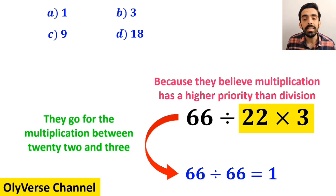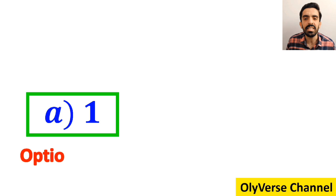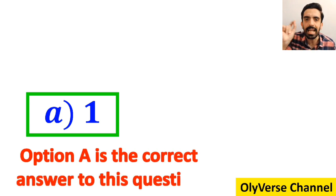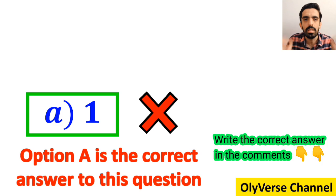Then, without any hesitation, they conclude that the correct answer to this question must be option A. However, this answer is absolutely wrong.